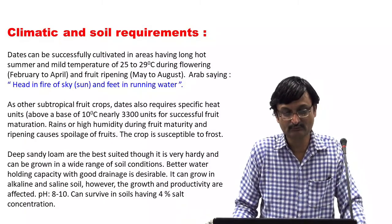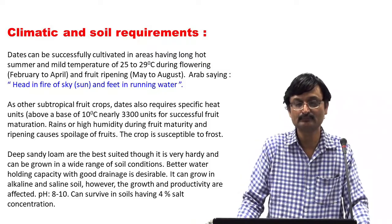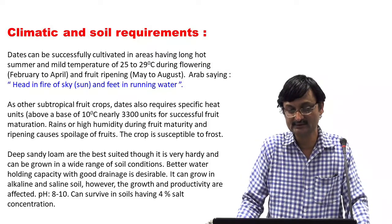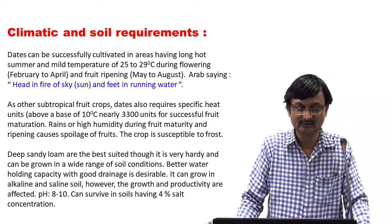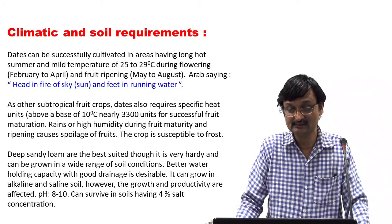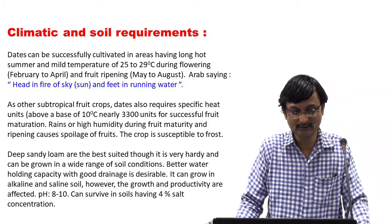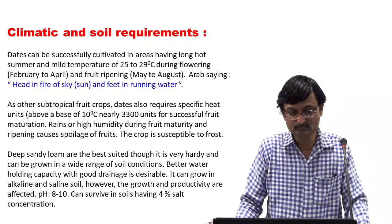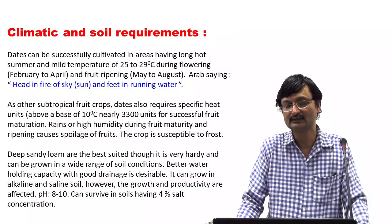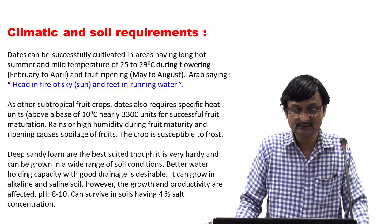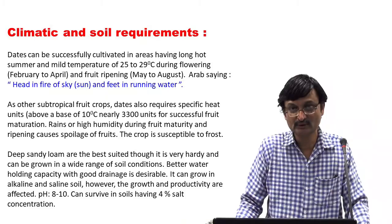Climatic and soil requirements: Date can be successfully cultivated in areas having long hot summers and mild temperature of 25–29 degrees Celsius during flowering (February to April) and fruit ripening (May to August). There is an Arab saying: the head is in fire of the sky, that is sun, and feet in running water — very pertinent to date palm. As with other subtropical fruit crops, date also requires specific heat units above a base of 10°C, nearly 3300 units for successful fruit maturation. Rains or high humidity during fruit maturity and ripening causes spoilage of fruits.